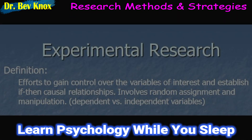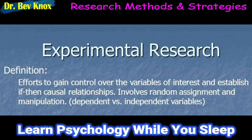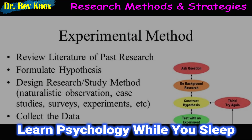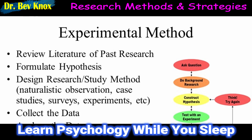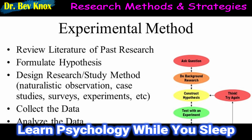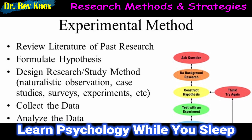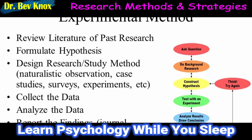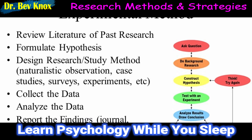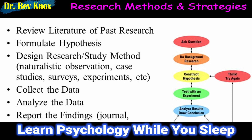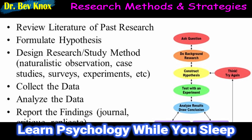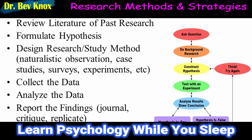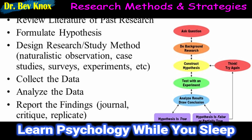There is an alternative technique that does establish causality: the experiment. The only way psychologists can establish cause-and-effect relationships through research is by carrying out an experiment. In a formal experiment, the researcher investigates the relationship between two or more variables by deliberately changing one variable in a controlled situation and observing the effects of that change on other aspects of the situation. The conditions are created and controlled by the researcher, who deliberately makes a change in those conditions in order to observe the effects.